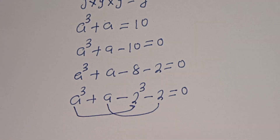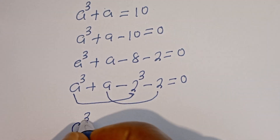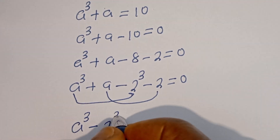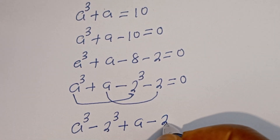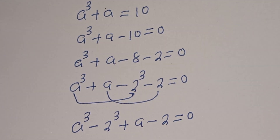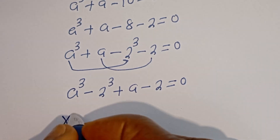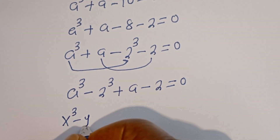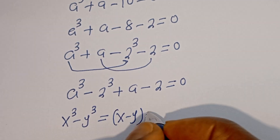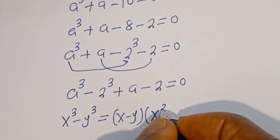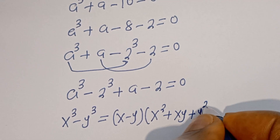So we have A to the power of 3 minus 2 to the power of 3, plus A minus 2, equals 0. Take note of the difference of cubes identity: S³ minus Y³ equals (S minus Y) times (S squared plus SY plus Y squared).